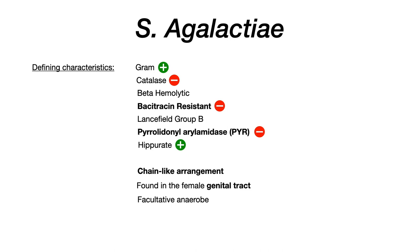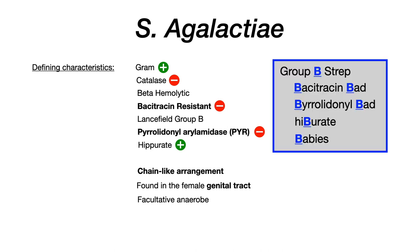My mnemonic to remember this is group B strep — focus on that letter B. B for bacitracin bad, or bacitracin resistant. B for PYR negative, substituting B for the P just to complete the mnemonic. And B for hippurate — I remember 'hiburate' — reminding me that it's hippurate positive for group B strep. And lastly, remember 'babies,' because the clinical diseases strep agalactiae causes are usually most severe in babies. That baby mnemonic will also cue us in to remember when we need to be testing for strep agalactiae.